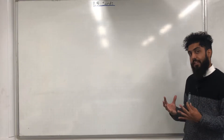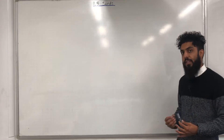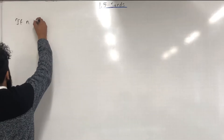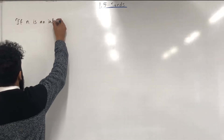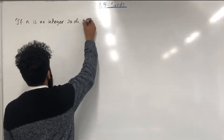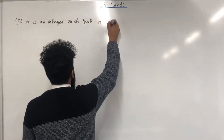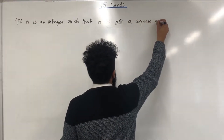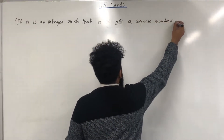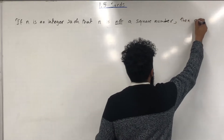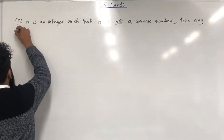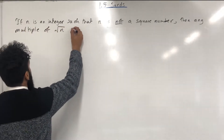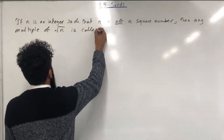I'm going to start off this section by explaining what a surd is. Here is the definition: if n is an integer such that n is not a square number, then any multiple of square root n is called a surd.